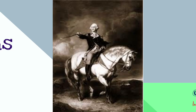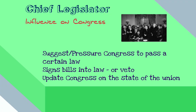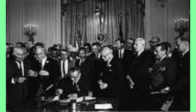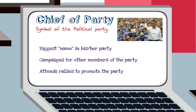Moving on, we have the Chief Legislator. The President influences Congress — and although not directly involved in lawmaking, he can suggest and pressure Congress to pass certain laws. He can sign a bill into law or veto it and send it back to Congress. He also updates Congress on the State of the Union every year. Here is President Lyndon Johnson signing the Civil Rights Act of 1964, granting African Americans equal rights.